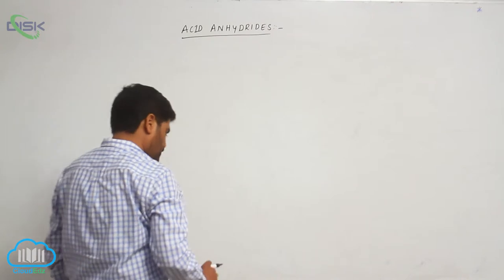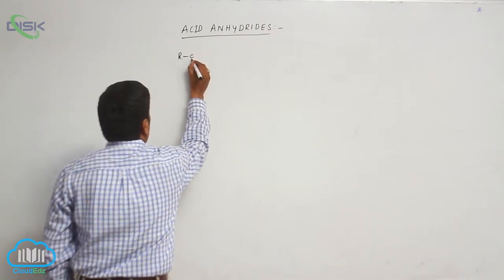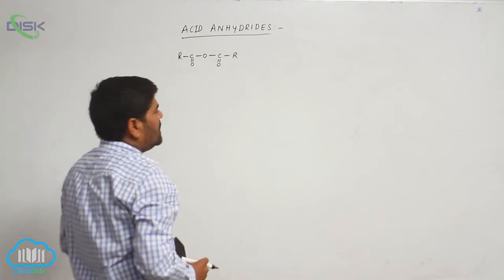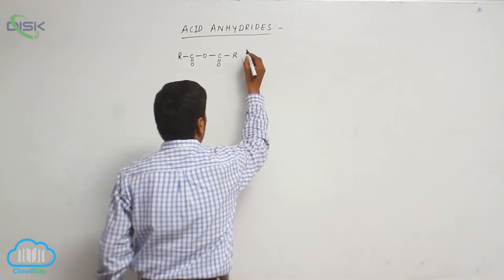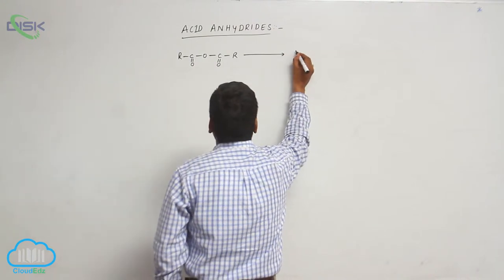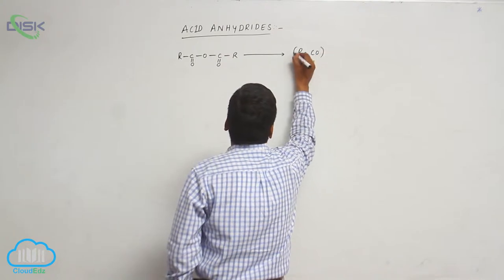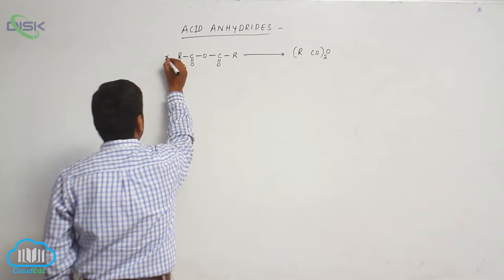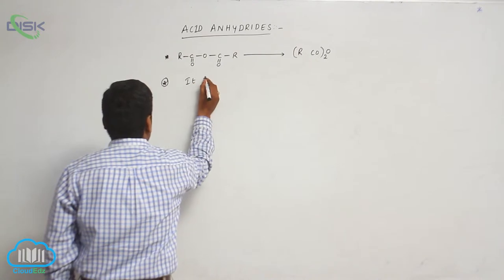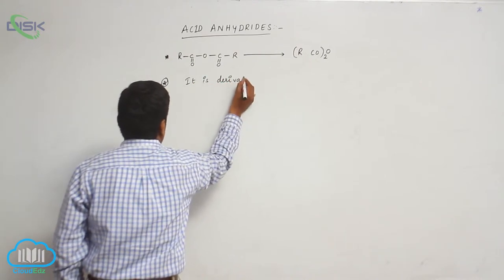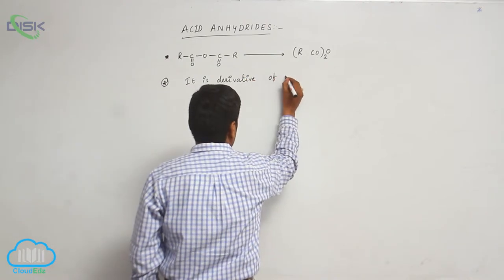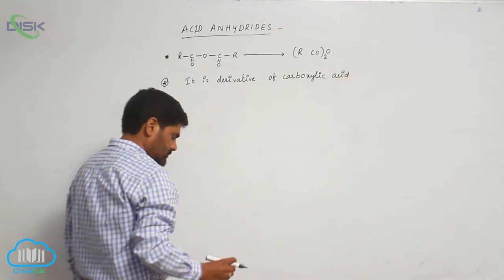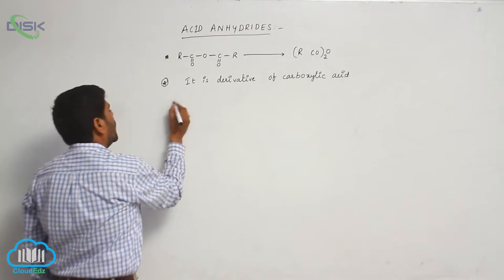Acid anhydrides: the general molecular formula of an acid anhydride is R–C(=O)–O–C(=O)–R, also written as (RCO)₂O. Acid anhydride is a derivative of carboxylic acid.